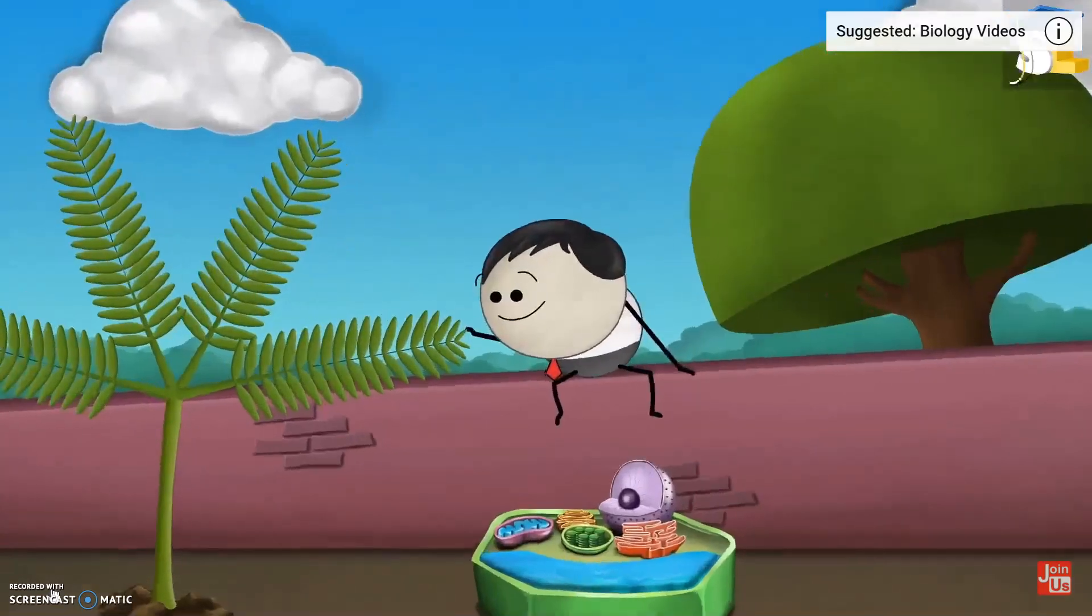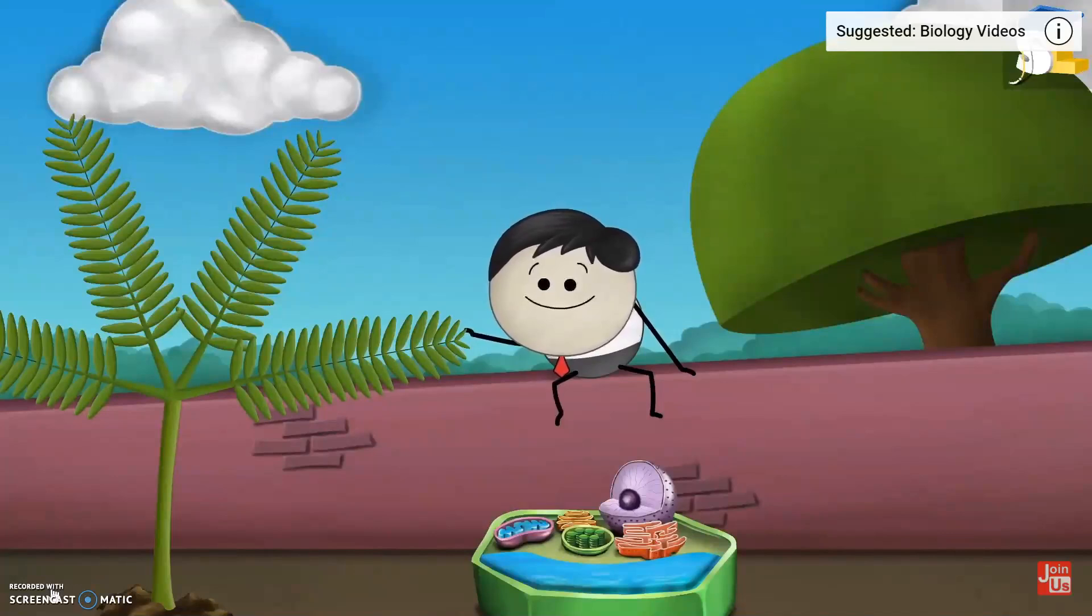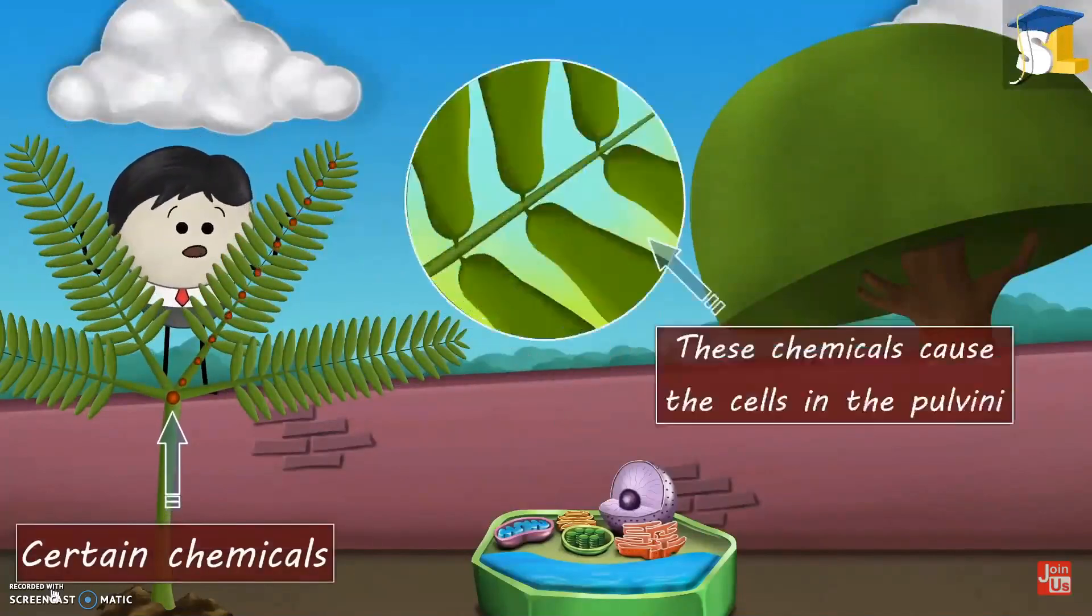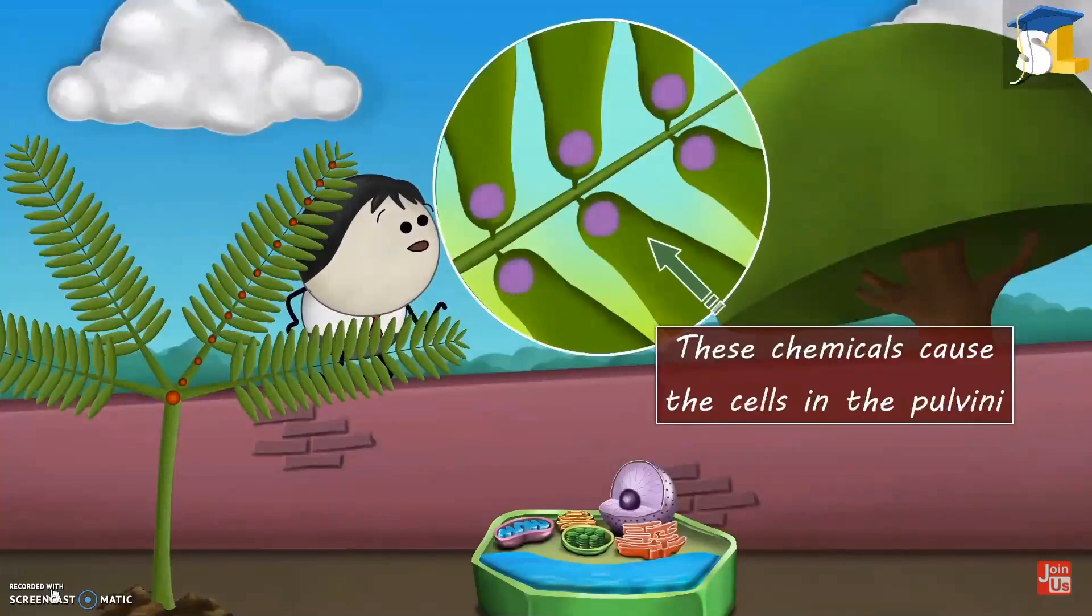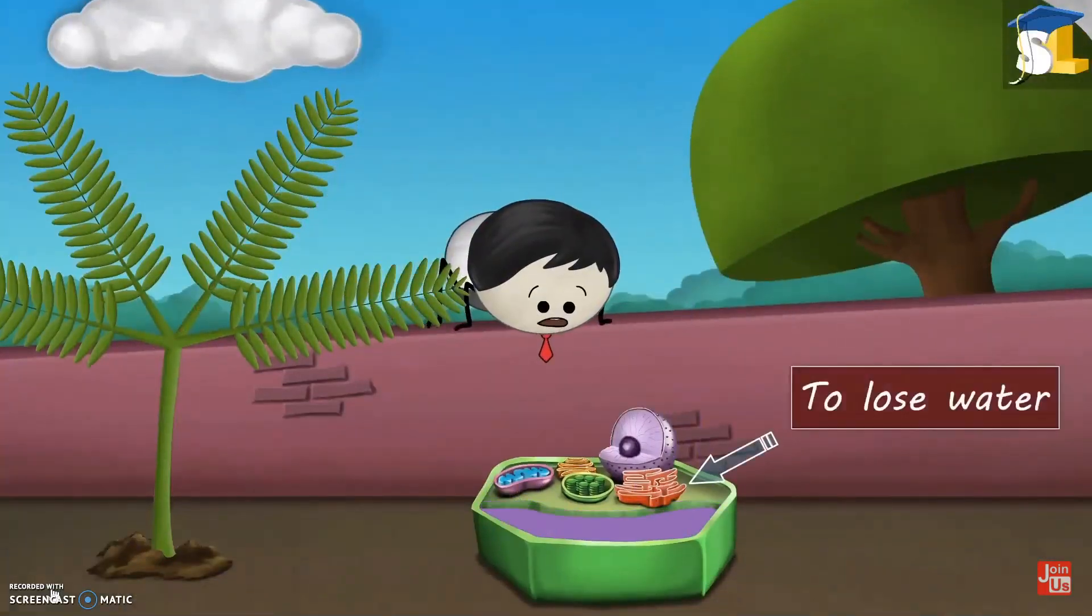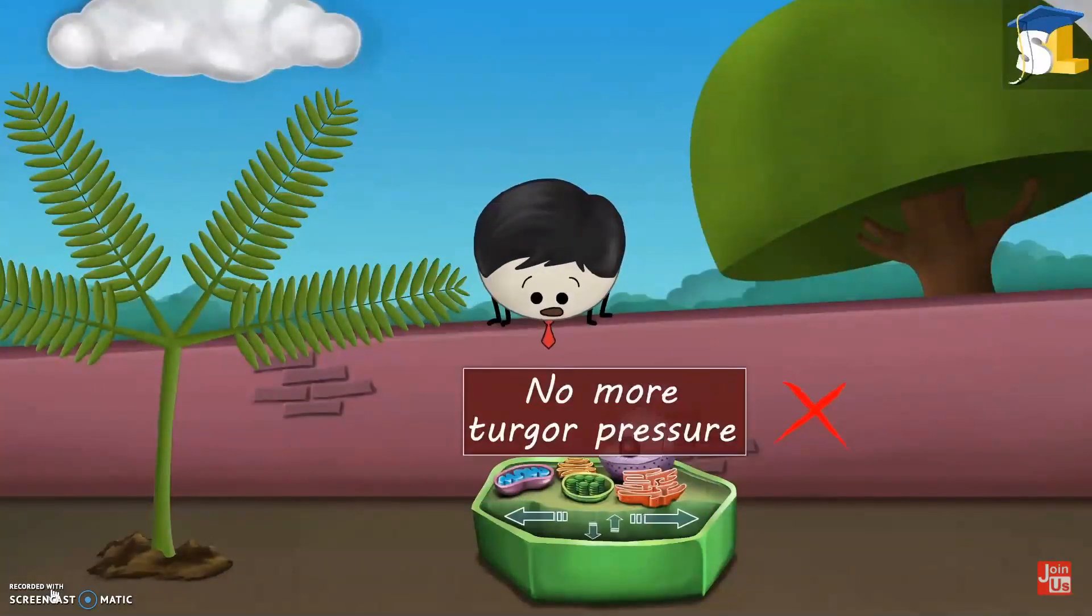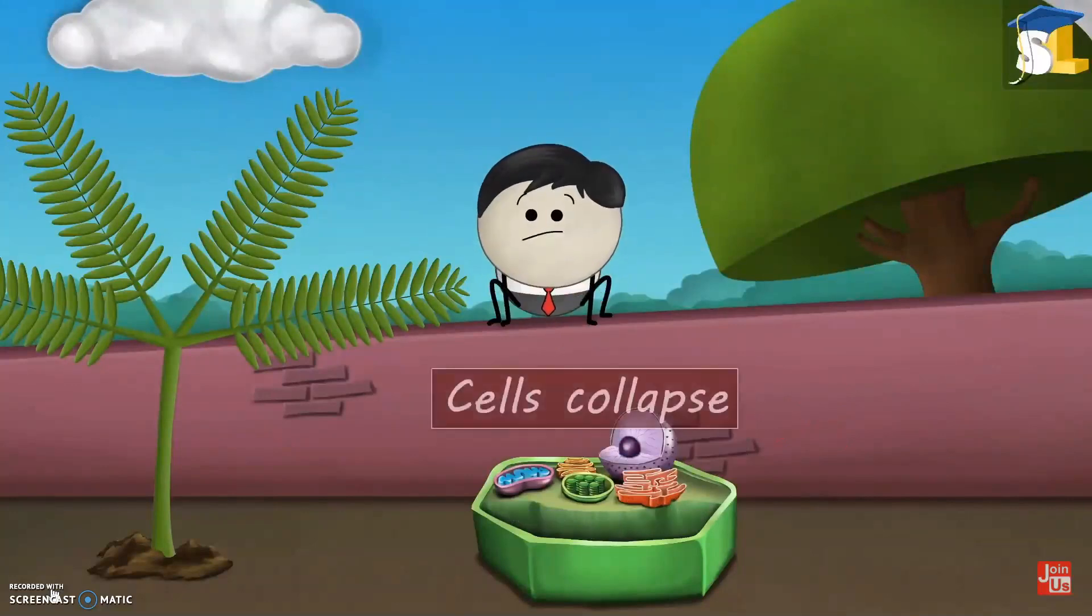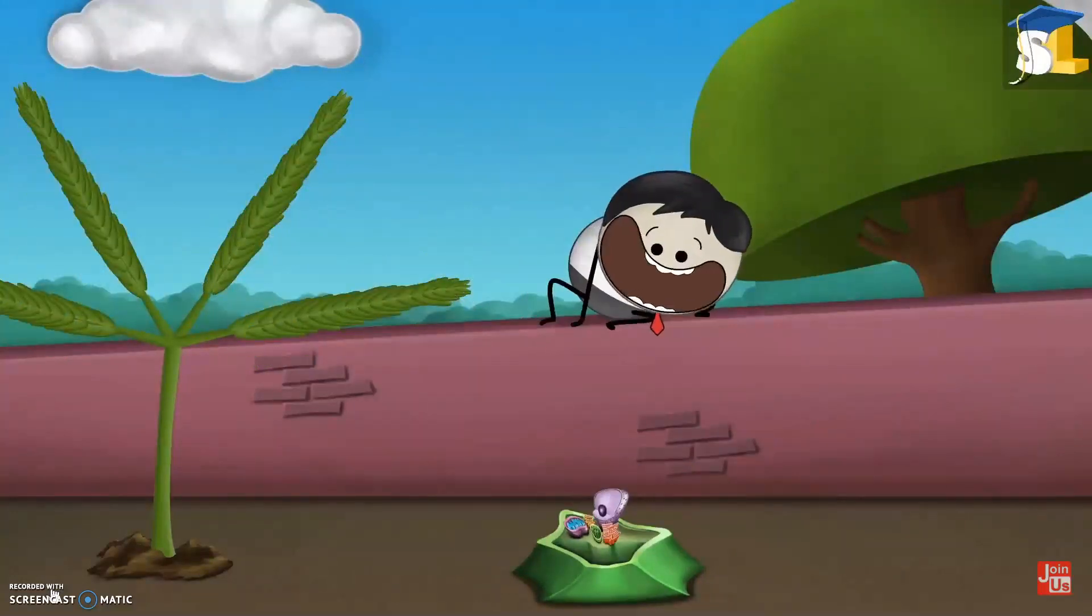Now, when we touch a leaflet of the touch-me-not plant, specific parts of the plant release certain chemicals. These chemicals cause the cells in the pulvini to lose water. When water is lost, there's no more turgor pressure. As a result, the cells collapse, resulting in the closing of leaflets.